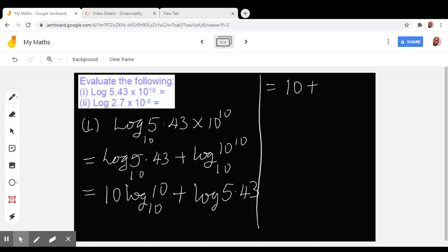Log 5.43 is equal to 0.7348. So adding the two up we have 10.7348. So that is the answer to log 5.43 times 10 raised to power 10. So the second one, the second one says